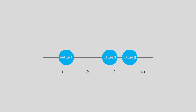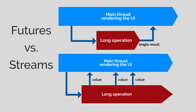We can subscribe to that object and whenever a stream emits a new value, we can just use it. Fundamentally, this is kind of the same thing as futures in Dart, except that a future can only provide a single result over a period of time, but a stream can provide zero or more results. Just try to look at a data stream as something that can push multiple pieces of data at different times.